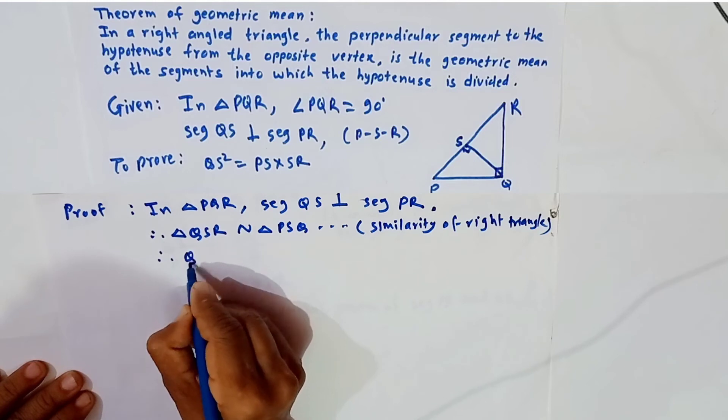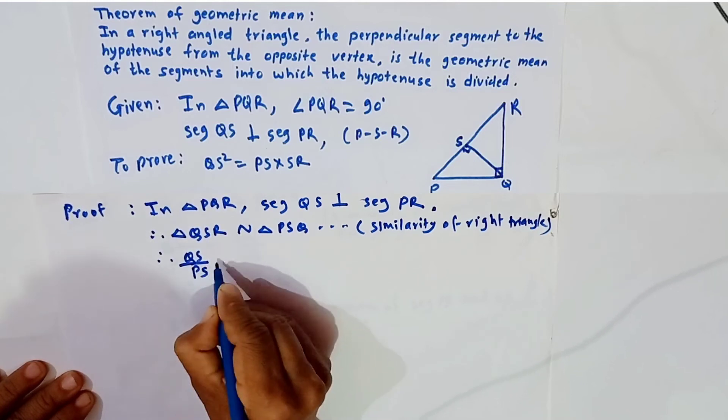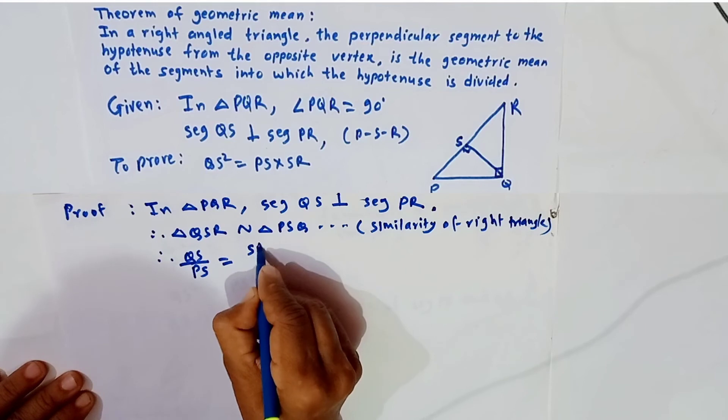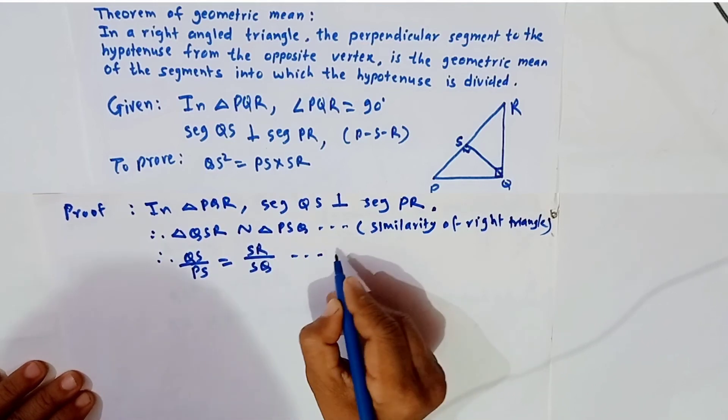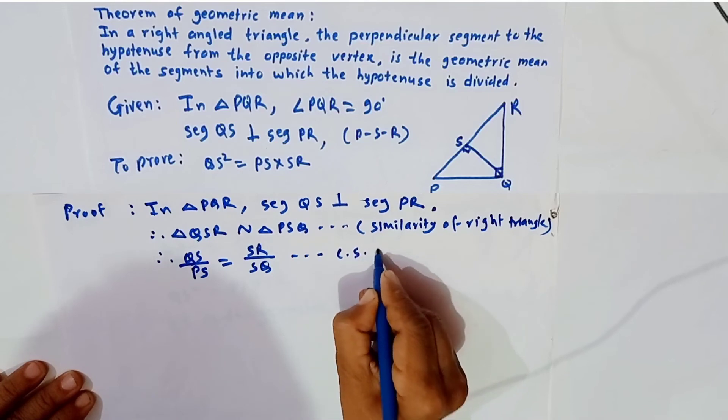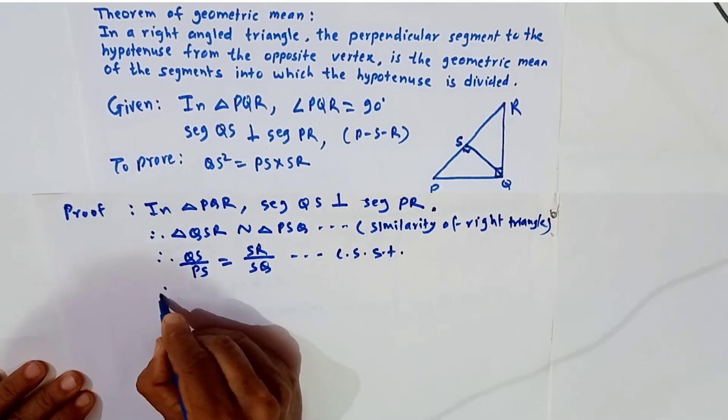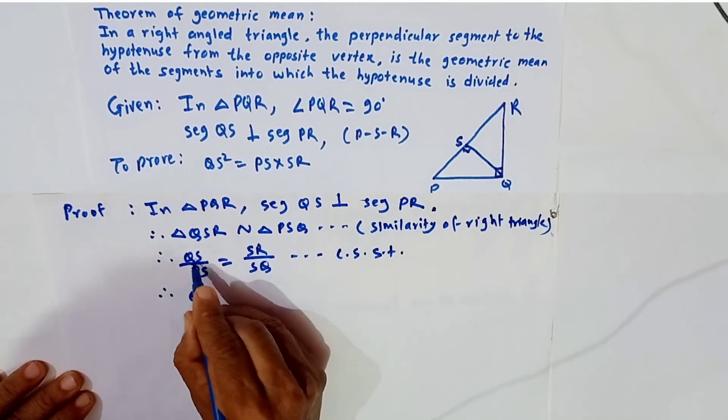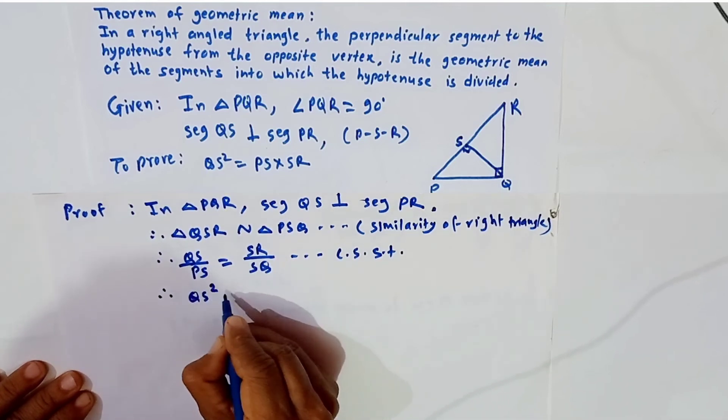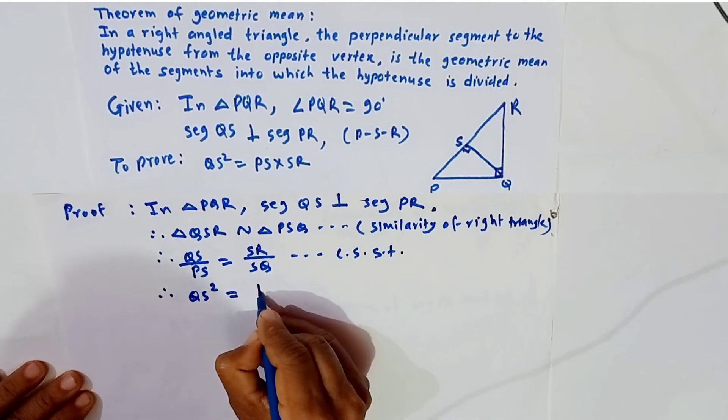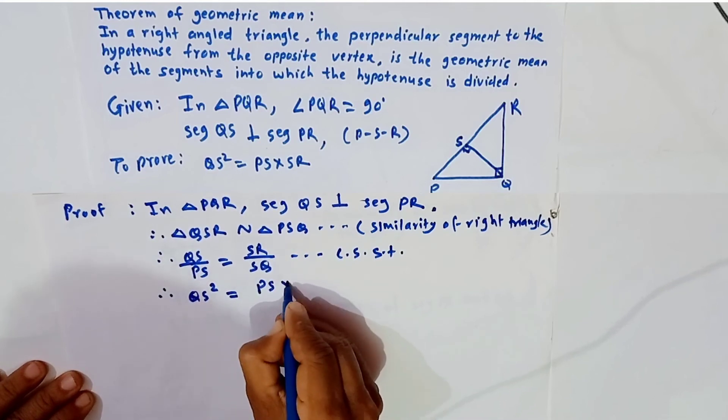Therefore QS upon PS equals SR upon SQ. These are corresponding sides of similar triangles. Now cross multiply: QS into QS becomes QS squared equals PS into SR.